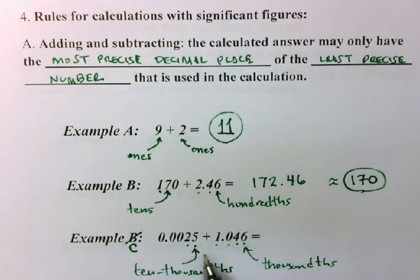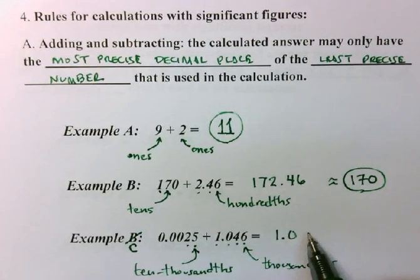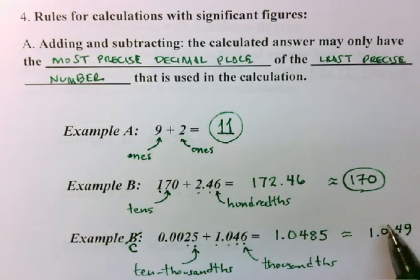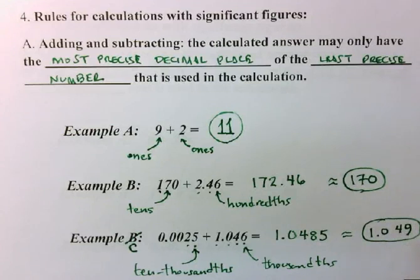Now if I plug this into my calculator, this is the answer that I would get, 1.0485. That is the mathematically correct answer. But scientifically significant answer would only be reported out to the thousandths place. Because the next digit is a five or greater, that eight is rounded up. And therefore the answer that I should report, 1.049, the scientifically significant answer. And there you have it.